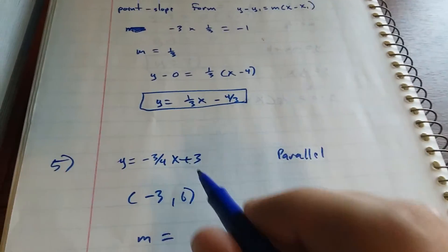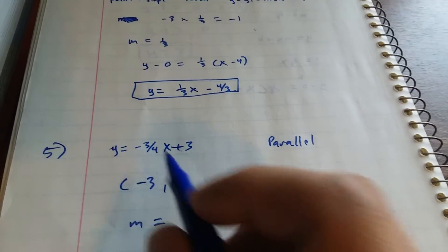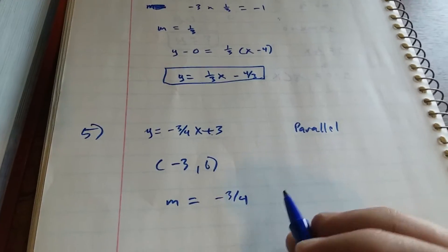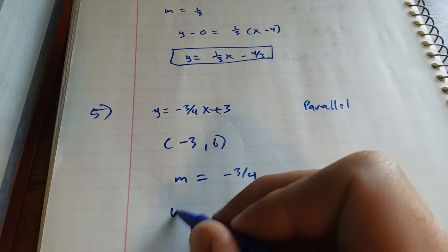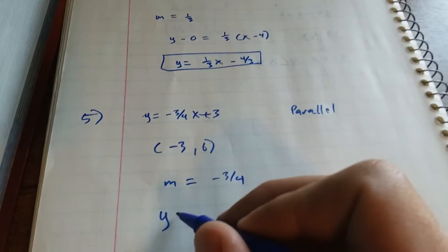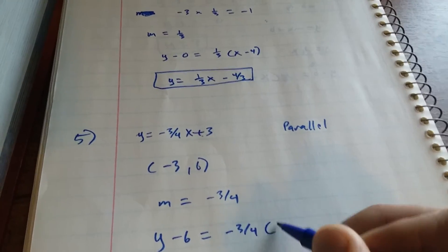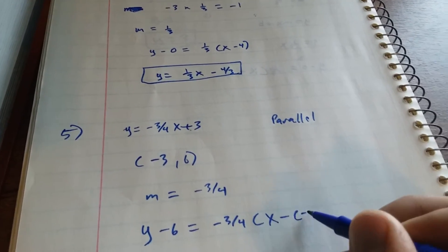You want the parallel line this time, so you're going to have the same slope, m equals negative 3/4. Use your point-slope form. y minus 6 equals negative 3/4 times x minus a negative 3.